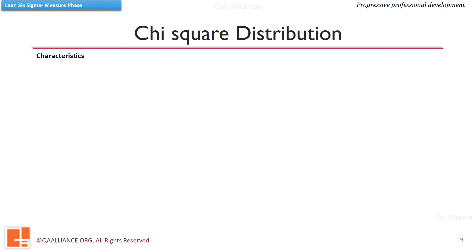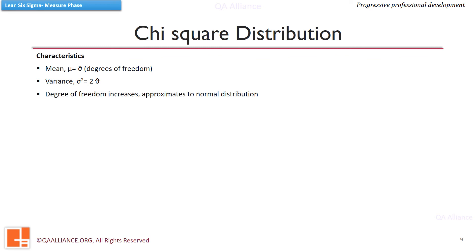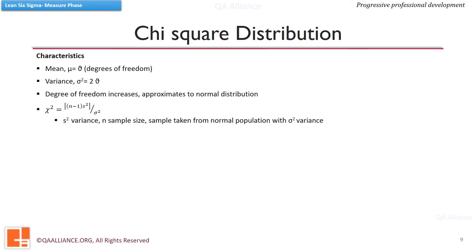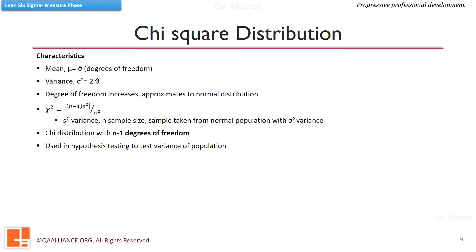Let us see the characteristics of the chi-square distribution. The mean of the distribution is equal to the number of degrees of freedom, that is Mu equals Nu. The variance is equal to 2 times the number of degrees of freedom: sigma-squared equals 2Nu. As the degrees of freedom increase, the chi-square curve approaches a normal distribution. If S-squared is the variance of a random sample of size N taken from a normal population with variance sigma-squared, then the chi-square statistic is represented by this equation, with N-1 degrees of freedom. It is used in hypothesis testing to test the variance of a population, and also for testing goodness of fit.